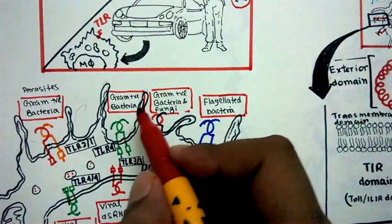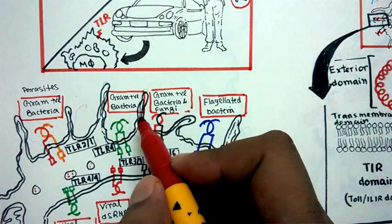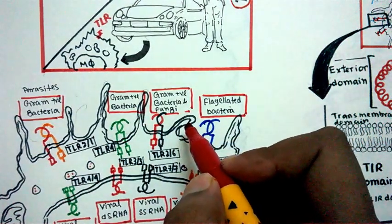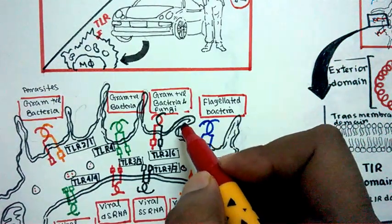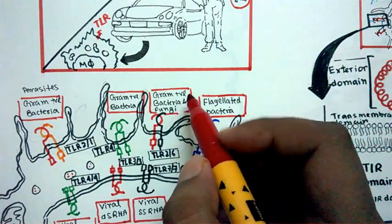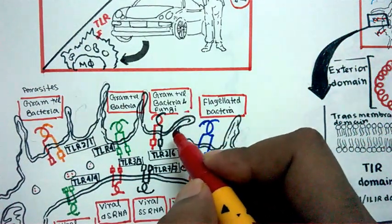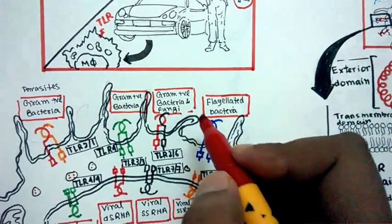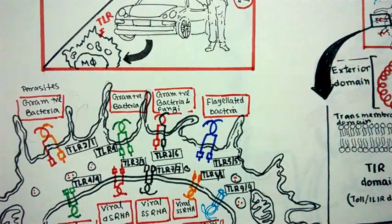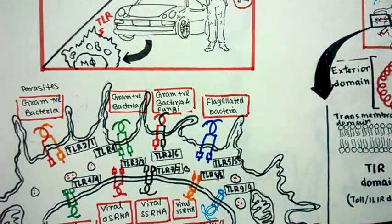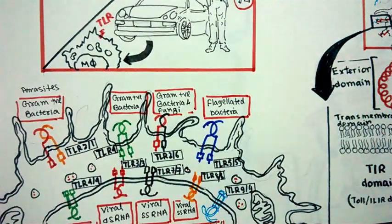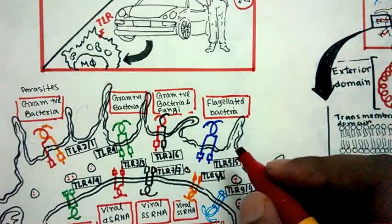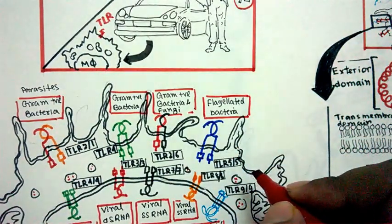TLR2 and TLR6 heterodimerize and form heterodimers. They can recognize fungal patterns and gram-positive bacteria. The flagella is detected by TLR5, which homodimerizes.